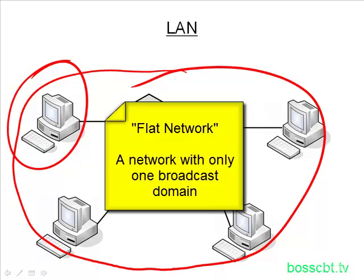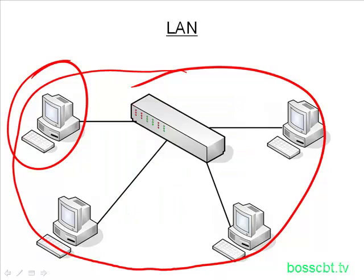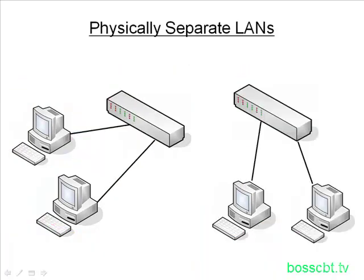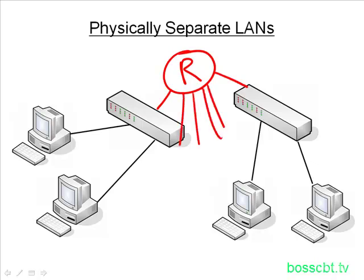You may hear the term flat network — that usually refers to a network with just a single broadcast domain. We can try a few different things to address this problem. We could do physically separate LANs, having two switches with certain PCs on one and certain PCs on another. However, this doesn't scale well and becomes very expensive. We could introduce a router, since each interface on a router is a separate broadcast domain, but eventually you run out of interfaces. You'd have a lot of expenses in terms of switches and administration could get tricky.